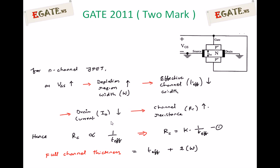Removing the proportionality, we get a proportionality constant K, so: Rc = K × (1 / T_effective). From this, if we calculate K, we can calculate any Rc for a given effective thickness. From the information given in the problem, we will now calculate the value of K.